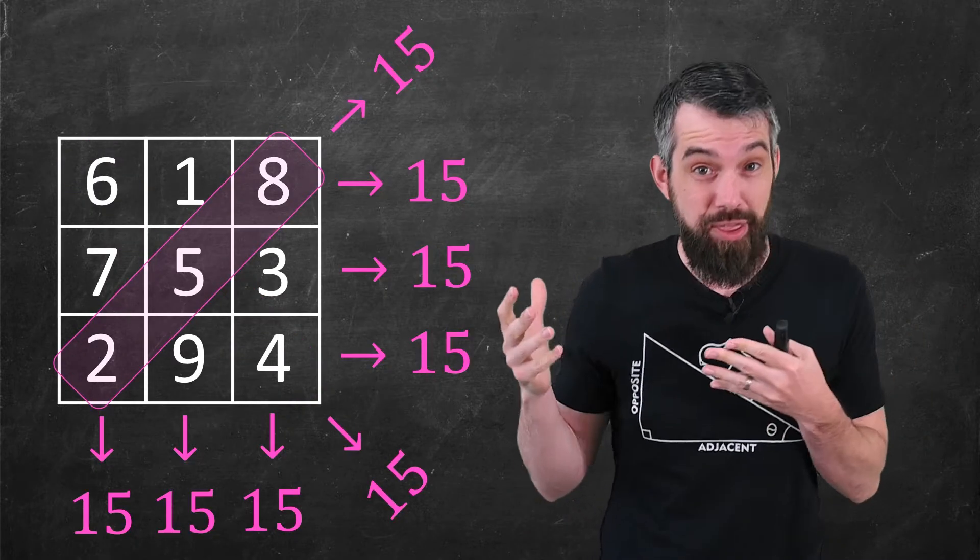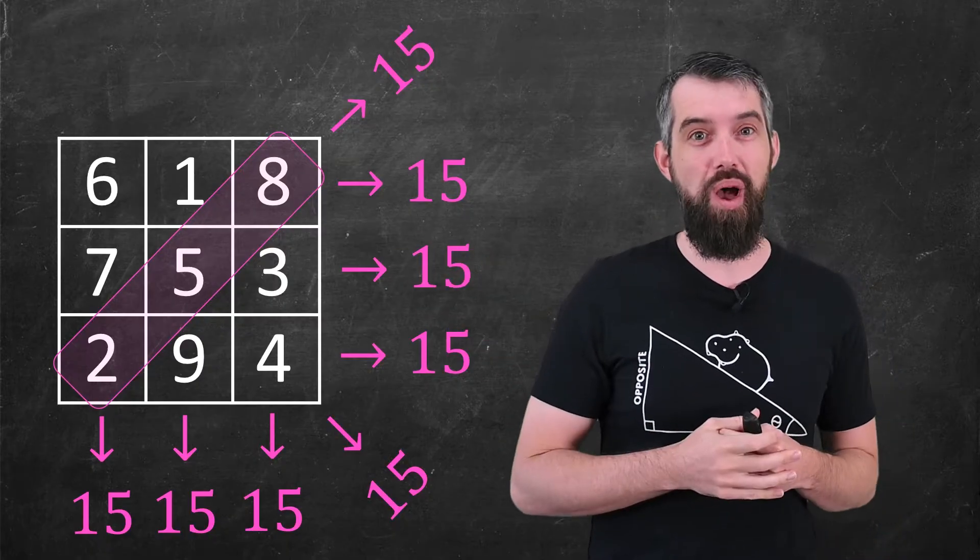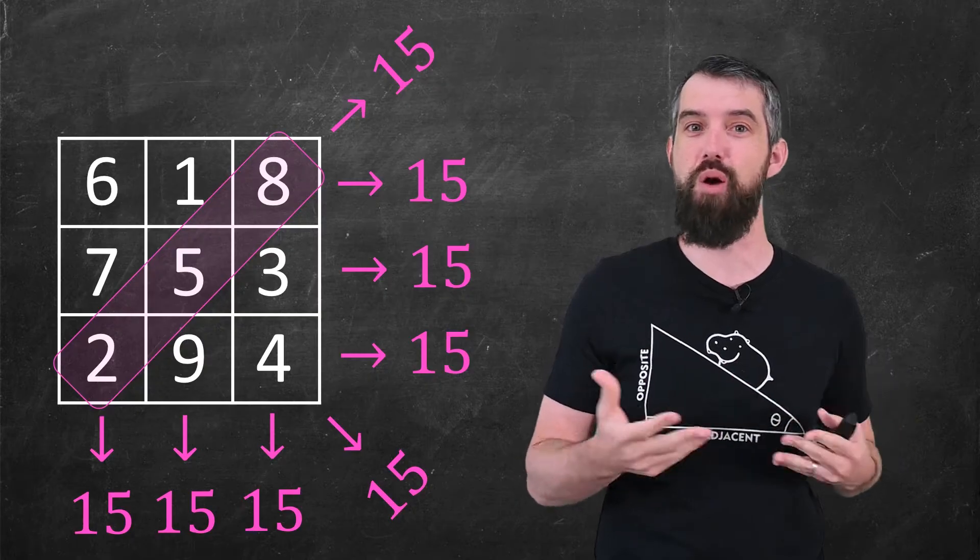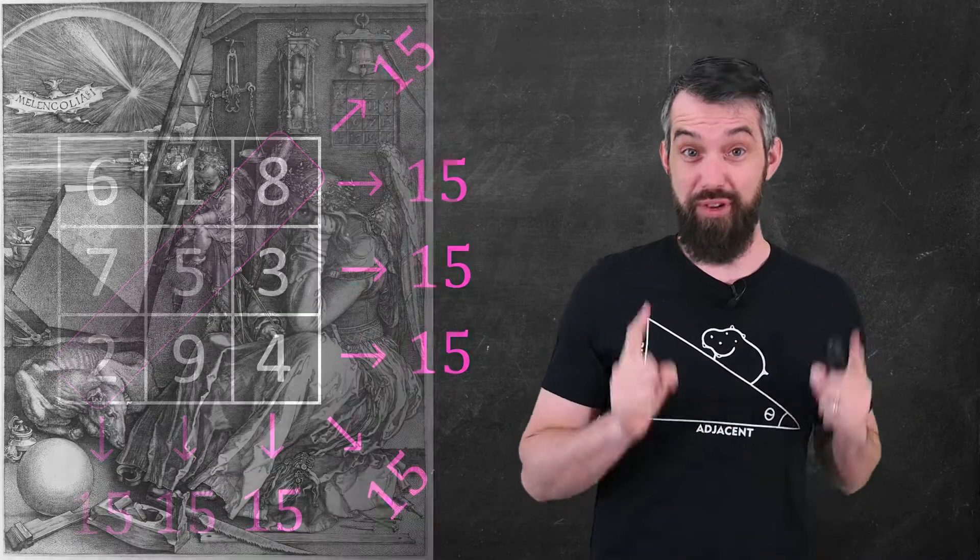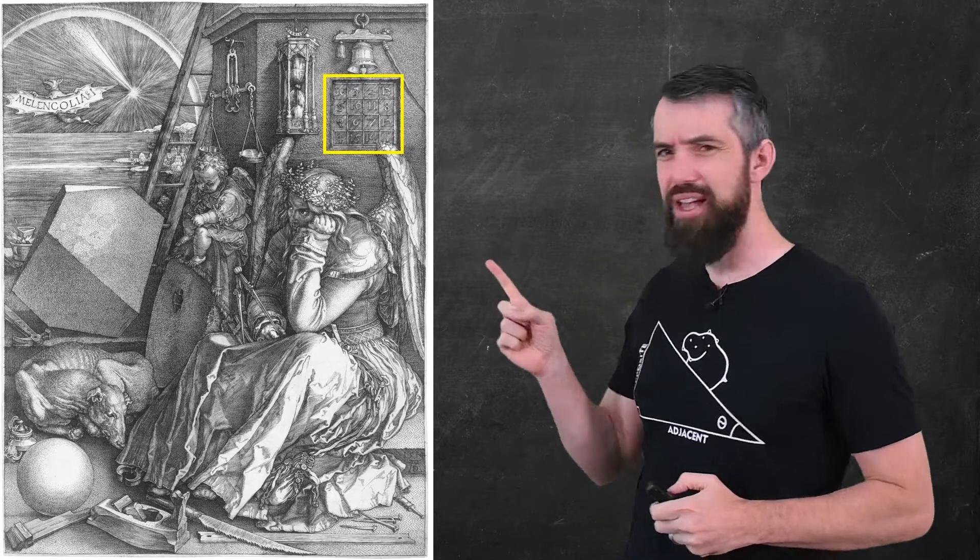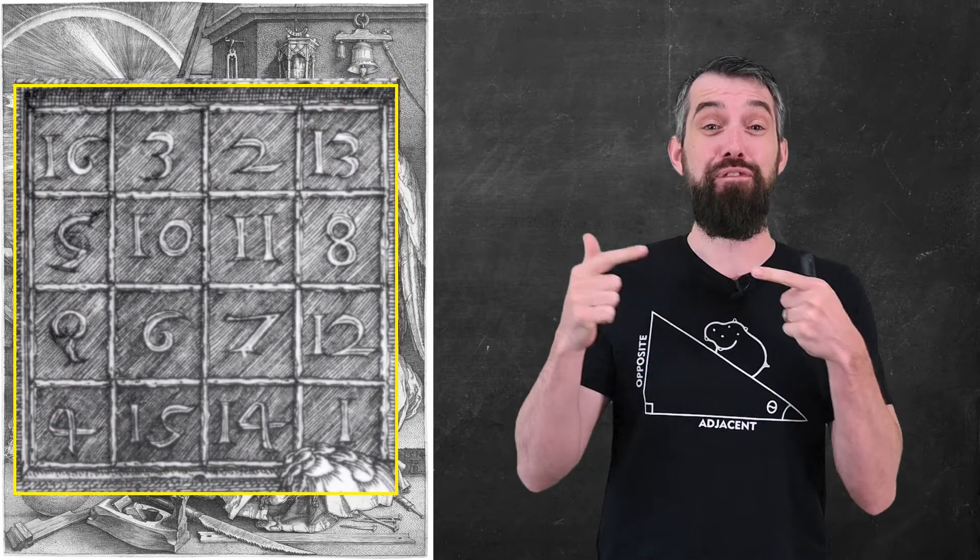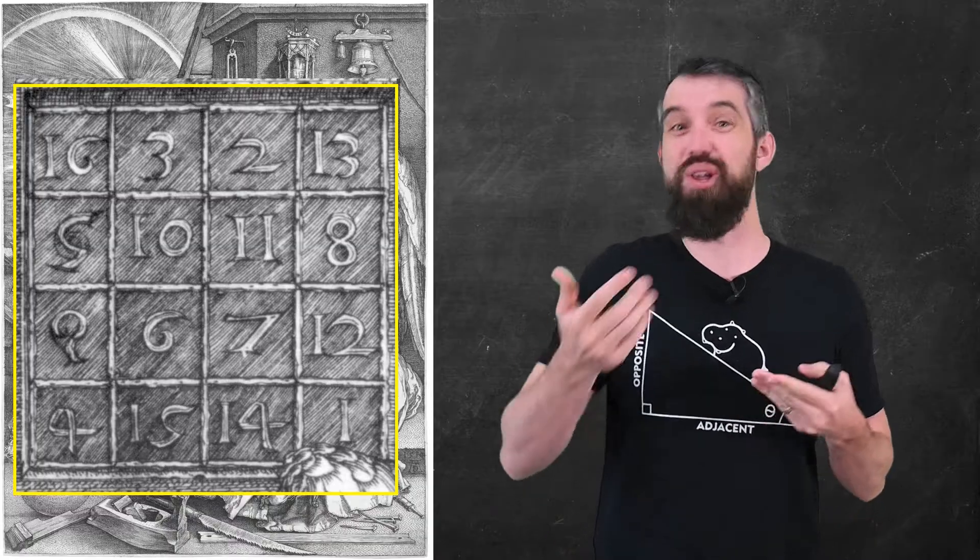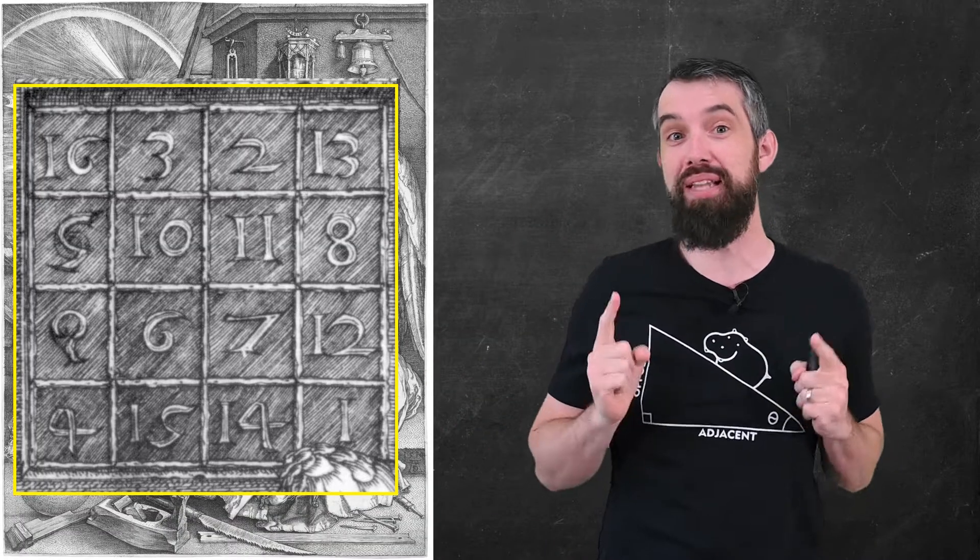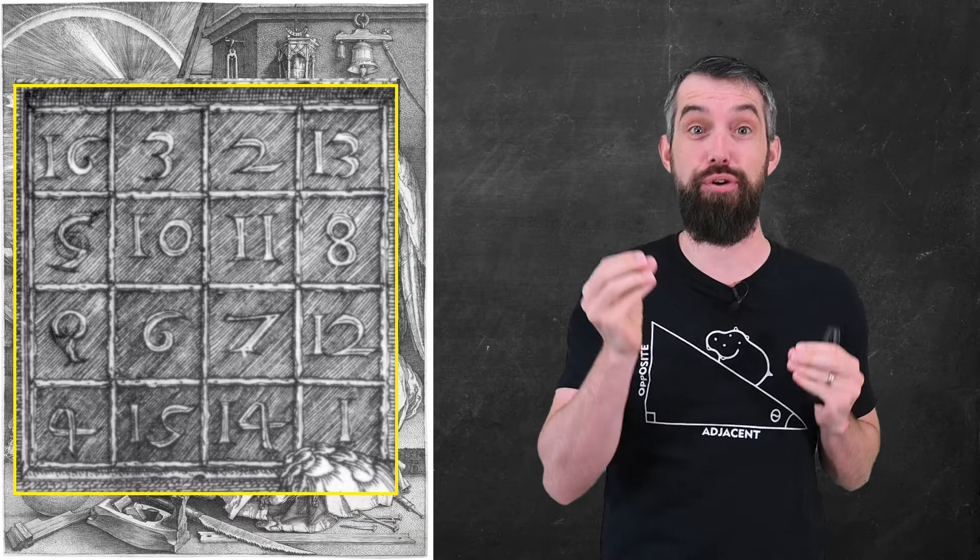Now, 3x3 magic squares like this one were known to ancient Chinese mathematicians a couple hundred years before Common Era. But you can do a lot bigger than 3x3. For example, in this beautiful 16th century engraving, up at the top corner, you can see a 4x4 magic square where it's got the numbers between 1 and 16 exactly once, and every row, column, and main diagonal adds, in this case, to 34.